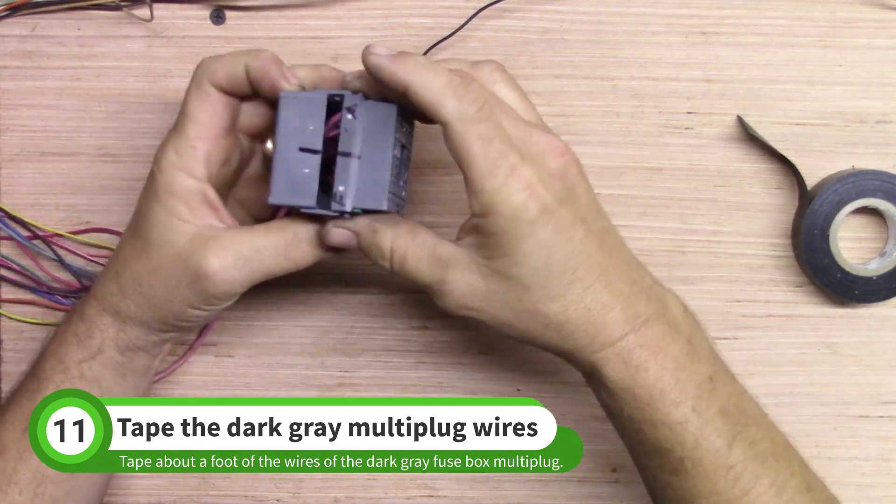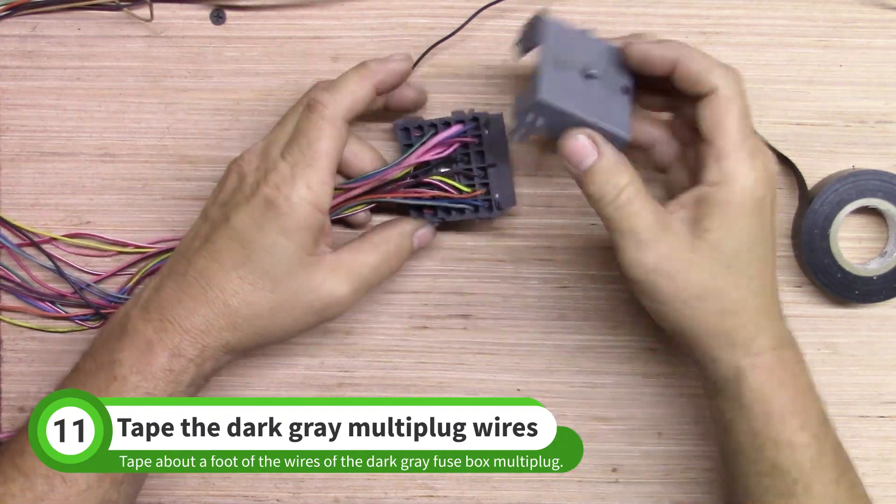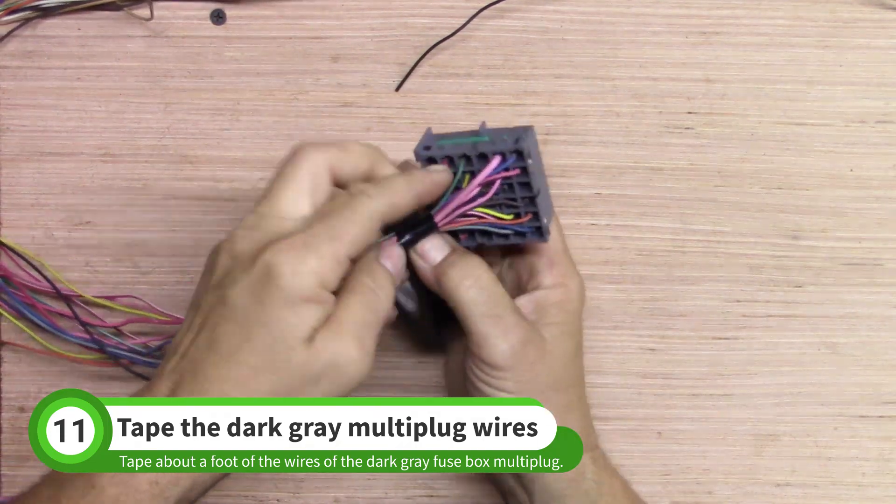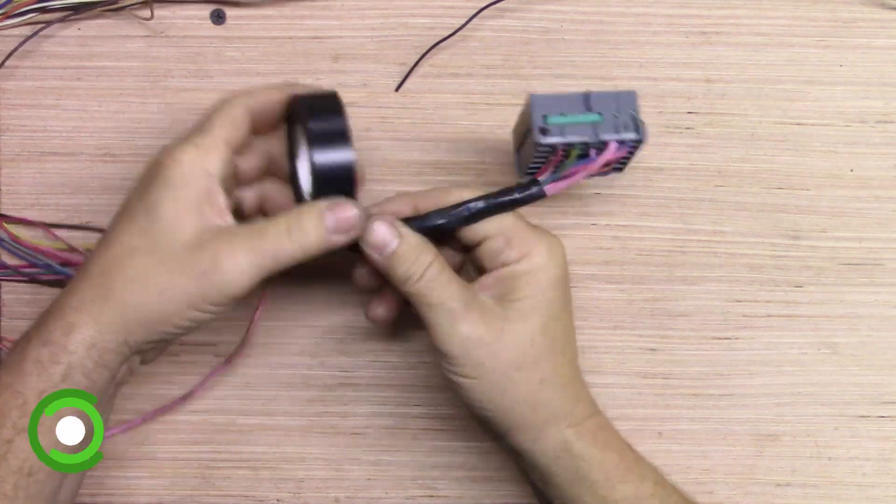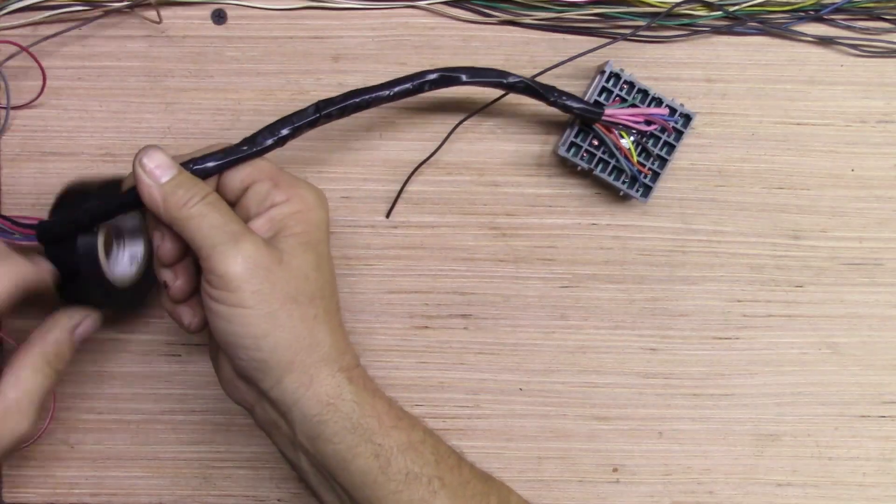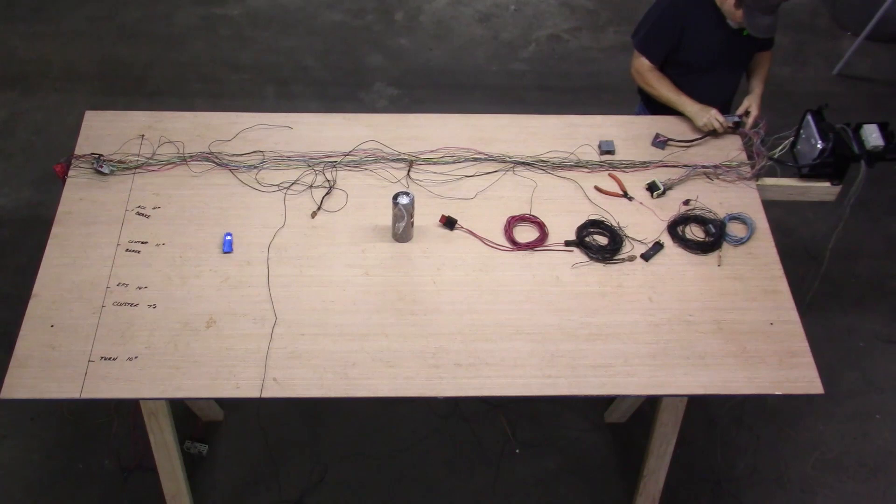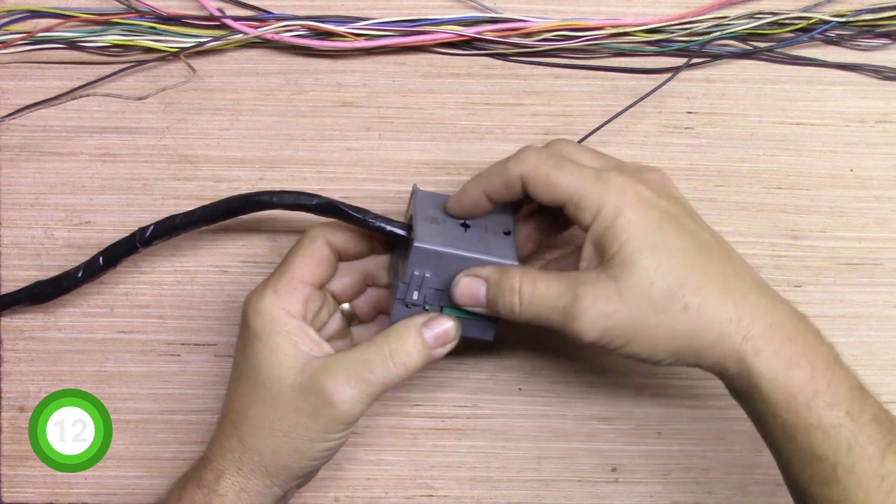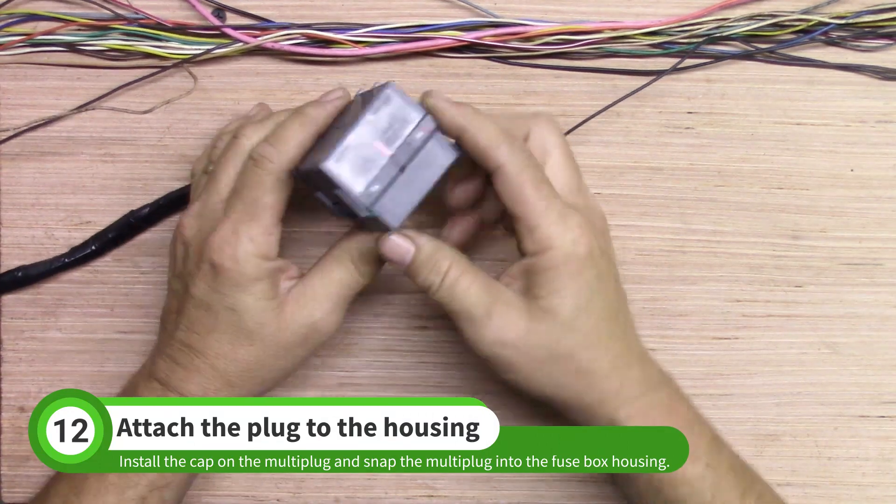Hold the cap of the dark gray multi-plug in place to see which way the wire should aim. Tape up about a foot of these wires. Install the cap and snap the plug into the fuse box housing.